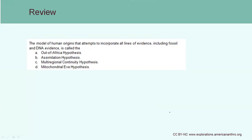Review question: The model of human origins that attempts to incorporate all lines of evidence including fossil and DNA evidence is called which? A) Out of Africa hypothesis, B) Assimilation hypothesis, C) Multi-regional continuity hypothesis, or D) Mitochondrial Eve hypothesis. The answer is B, the assimilation hypothesis, because it combined the two ideas of Out of Africa and multi-regional.